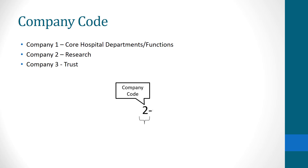At Unity Health Toronto, there are three ledgers separated based on function. Company 1 is Core — Hospital Departments. Company 2 is Research. Company 3 is Trust. You will know which company to pick based on where you want to draw or deposit your funds.